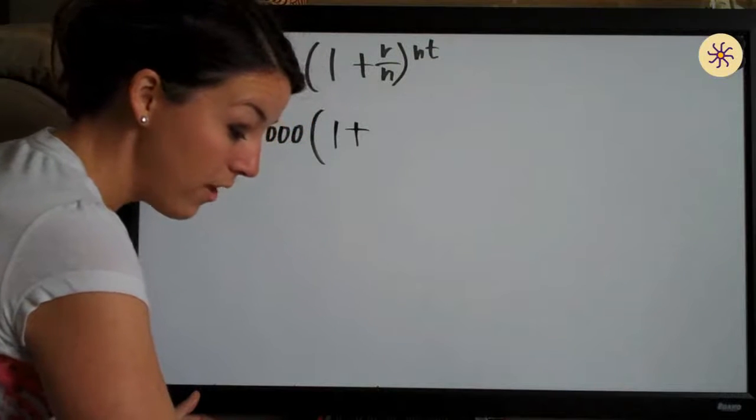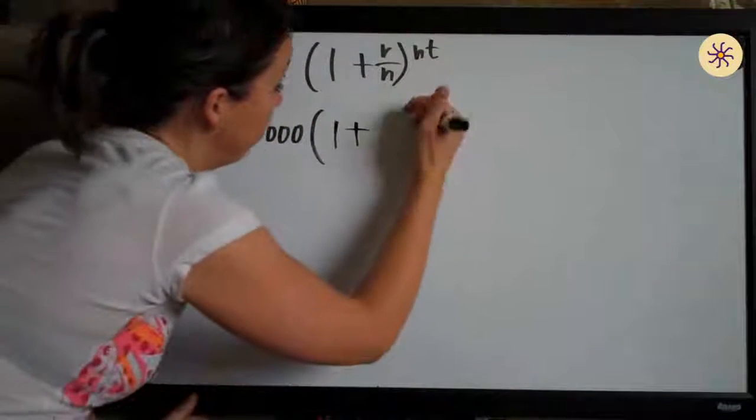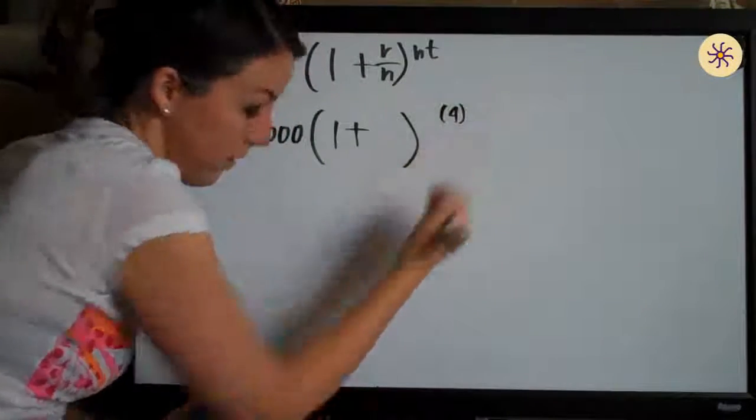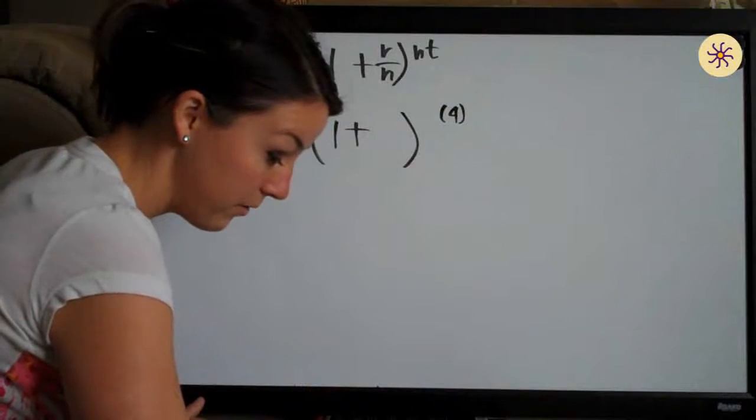Future value of $5,000 after four years, so t is four. T for time is four.